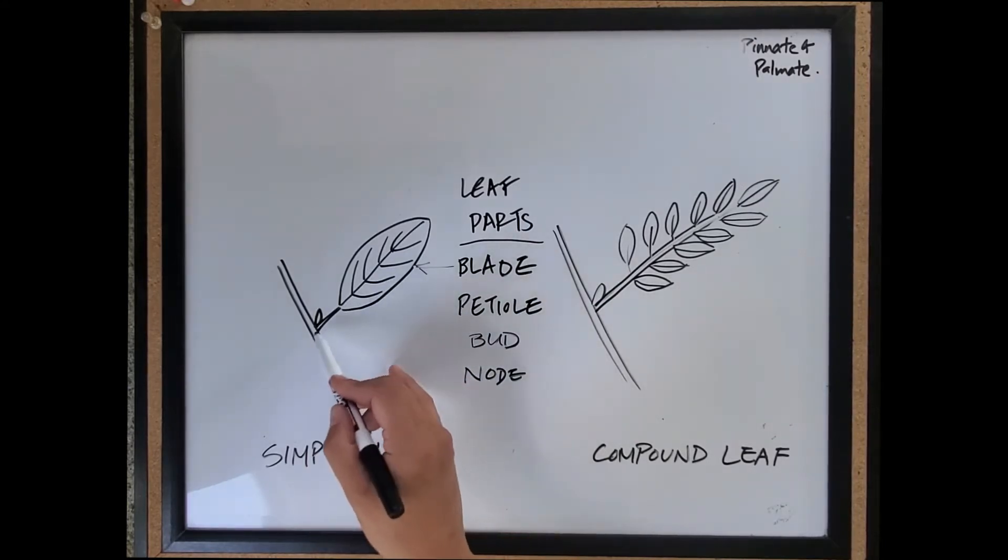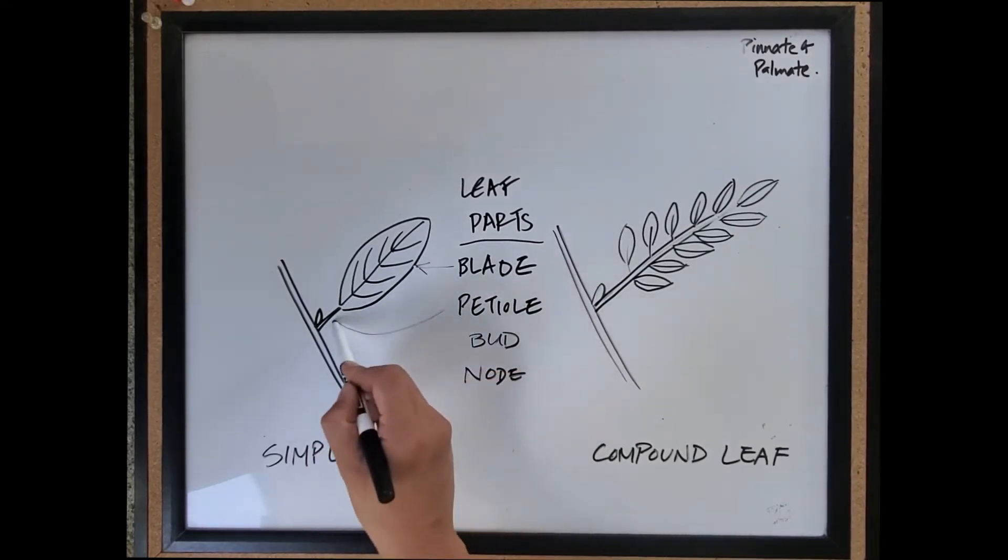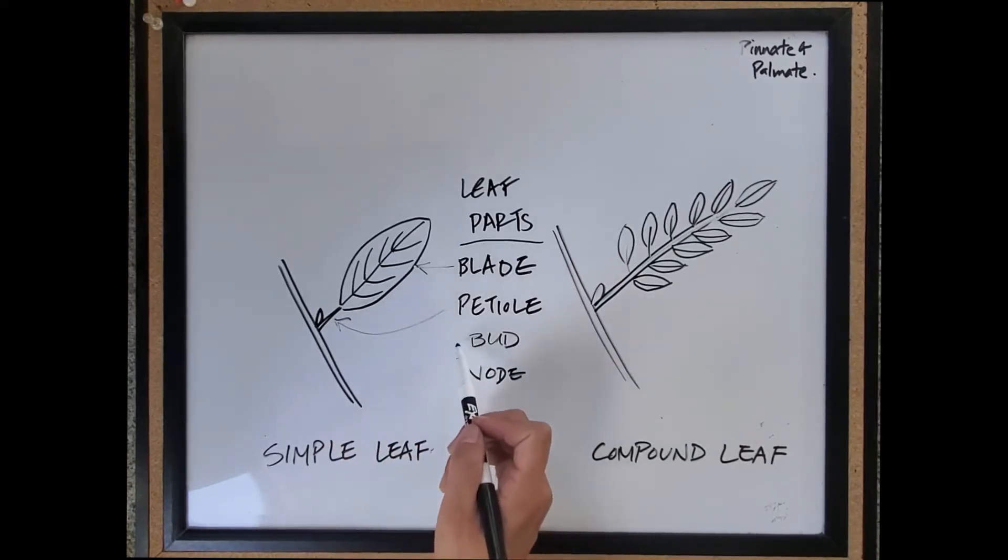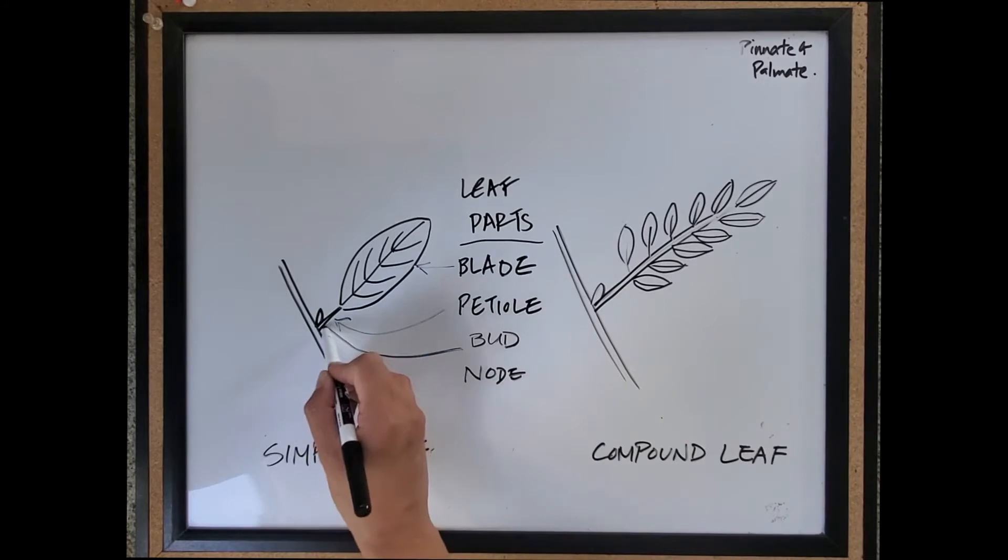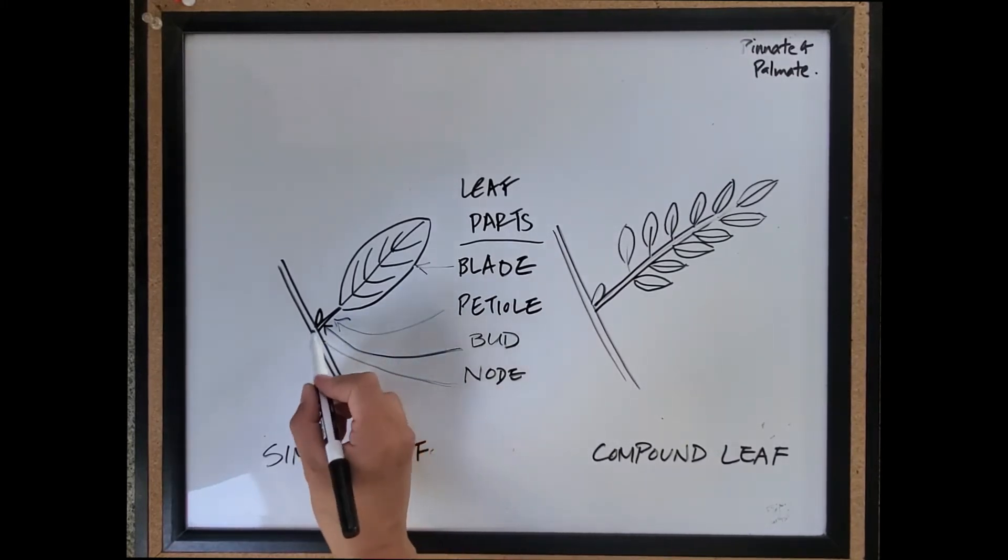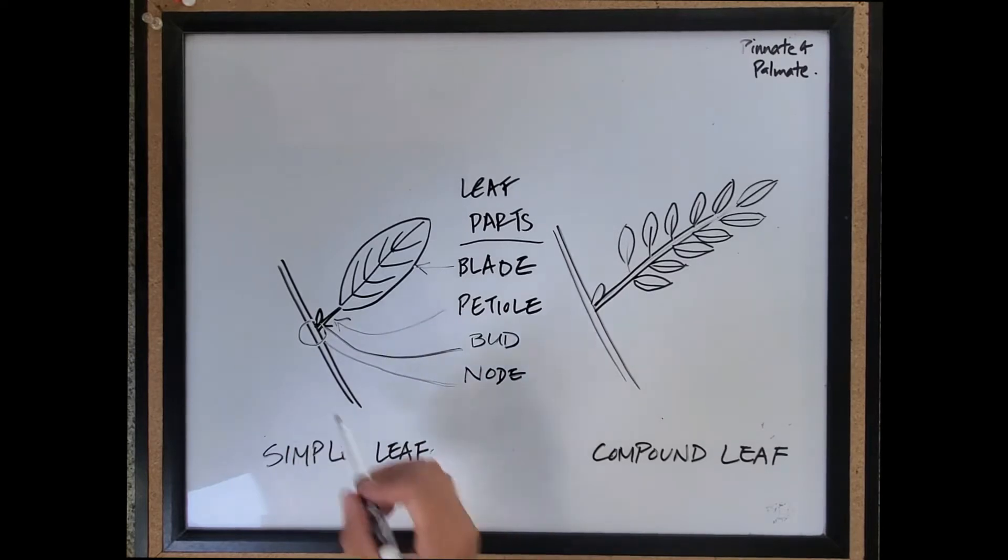Then it's connected to the stem with a petiole, and at the base of that petiole you'll find a bud. This is where that petiole connects to the stem. We call that the node. So the node is more like an area, that's right there.